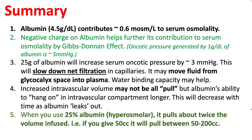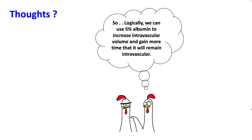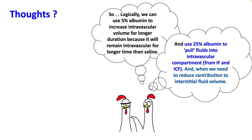When you use 25% albumin, it does pull about twice its infused volume. So if you give 50 cc, it will pull between 50 to 200 cc of extravascular fluid. Clinically, we can use 5% albumin to increase intravascular volume for a longer duration because it will remain in the intravascular compartment longer than saline. And we can possibly use 25% albumin to pull fluids into the intravascular compartment, knowing that this will come mostly from your intracellular compartment and when we need to reduce contribution to interstitial fluid volume.